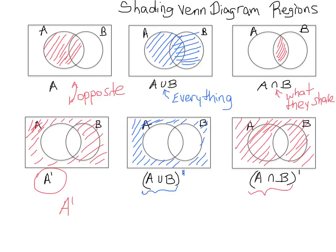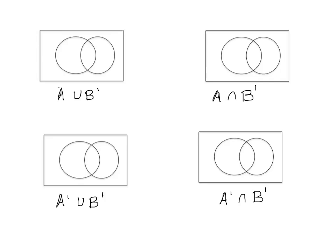These problems are a little more difficult. We're going to do the ones with union first. Remember when you see the union sign, it means you're shading everything in both sets. In this case we're shading everything in A as well as everything in the complement of B. We can follow step-by-step instructions: first shade everything in A.